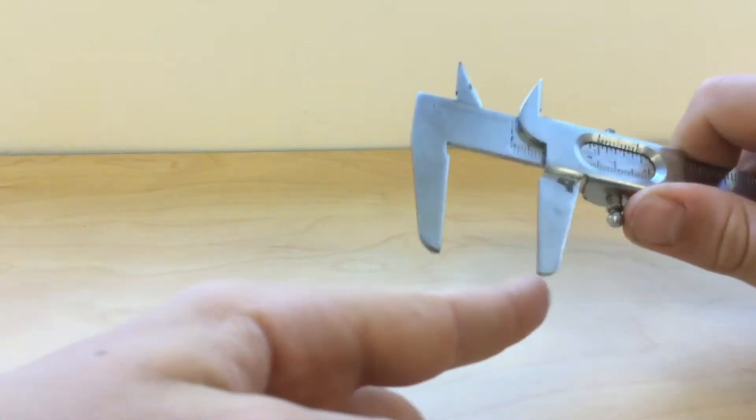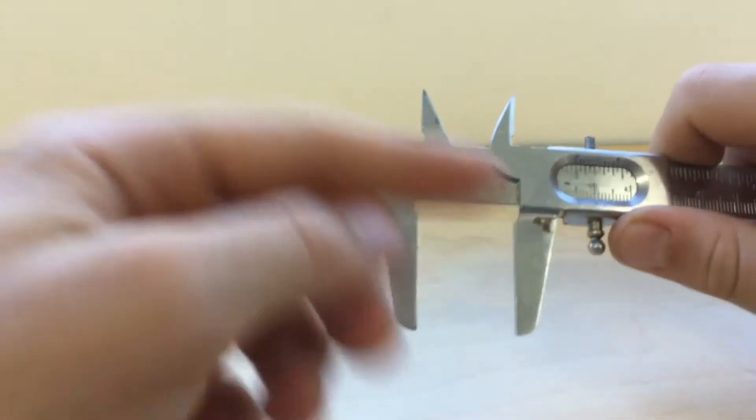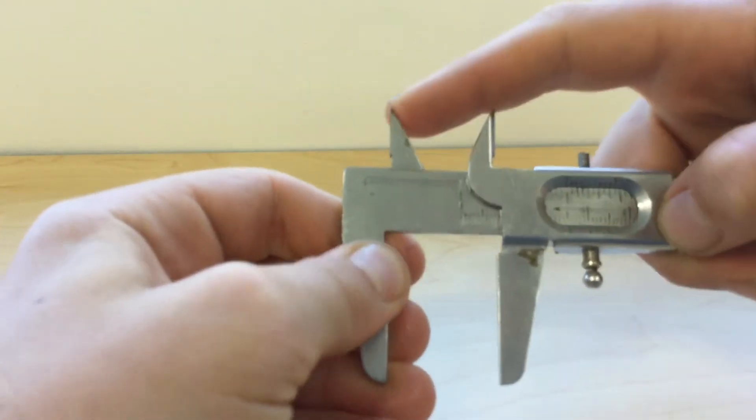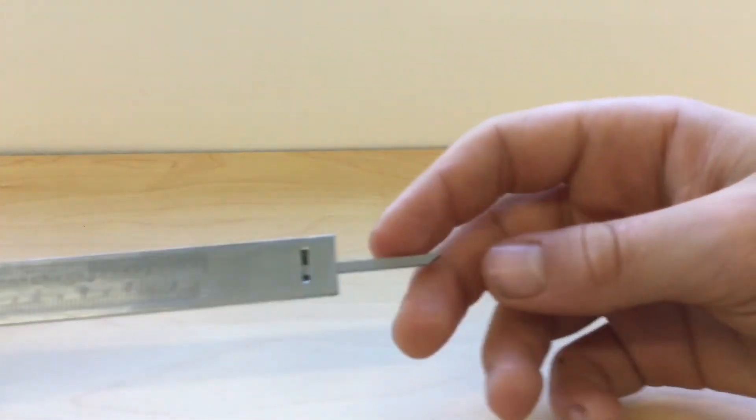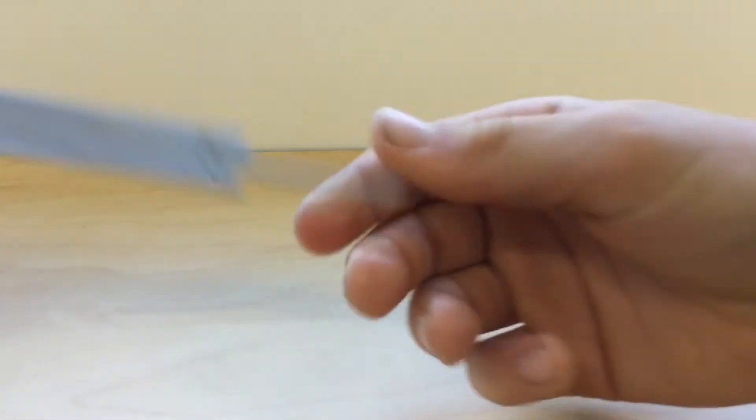The outside of something between these two prongs, the inside of something between these two prongs, and the depth of something with this point.